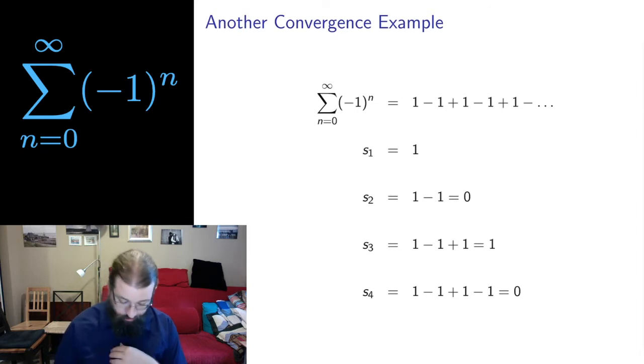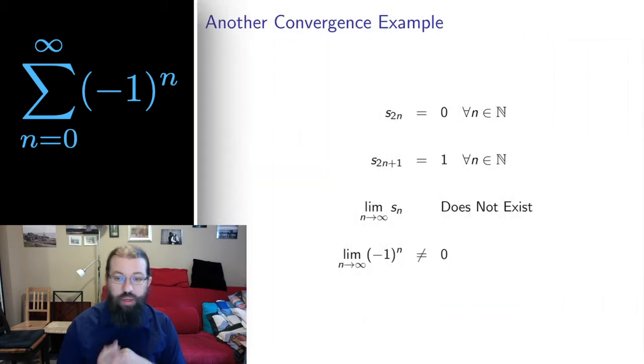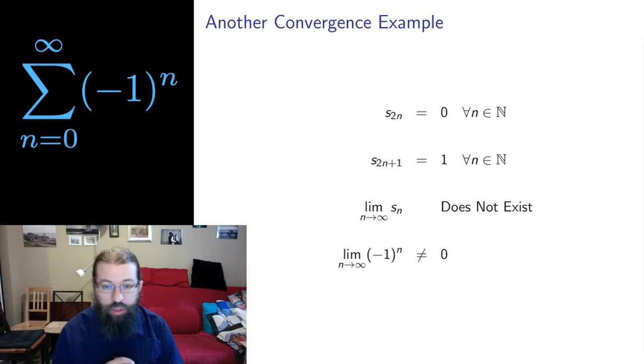Let's look at the partial sums. The first partial sum is just 1. It starts at n equals 0 so negative 1 to the 0 is 1. The second partial sum, 1 minus 1 is 0. The third partial sum we add 1 and get back to 1. The fourth partial sum we then subtract 1 and get back to 0. And this way we get a pattern. All the even partial sums are 0 and all the odd partial sums are 1.